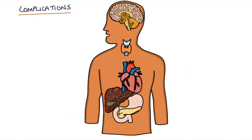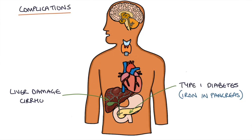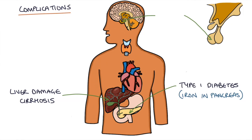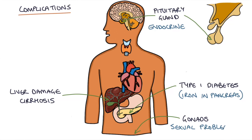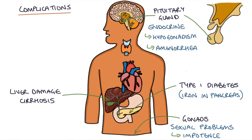Complications of hemochromatosis include type 1 diabetes, because iron deposits affect the functioning of the pancreas. It can cause liver damage and cirrhosis with all of its associated complications. Iron deposited in the pituitary glands and gonads leads to endocrine and sexual problems such as hypogonadism, where the gonads don't produce testosterone or oestrogen, as well as impotence and amenorrhea. It can also cause cardiomyopathy, where iron deposits in the heart lead to heart failure.